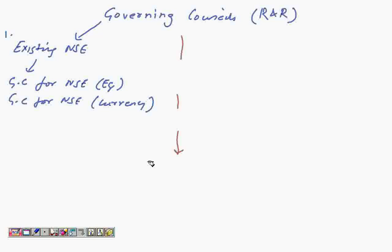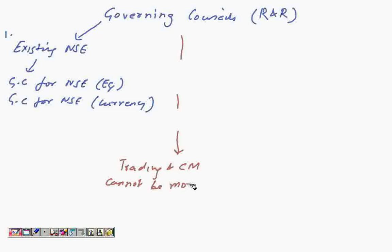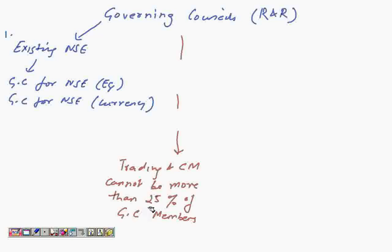When you're looking at a governing council, the trading and clearing members cannot be more than 25% of the GC members. So you cannot have all your traders and clearing members as part of the governing council — that's also a very important demarcation to remember.